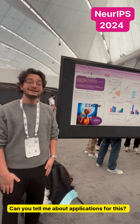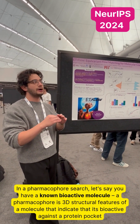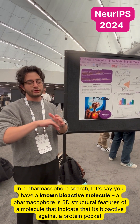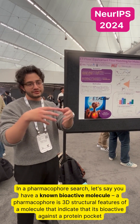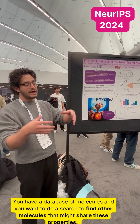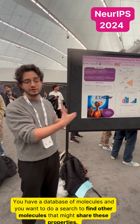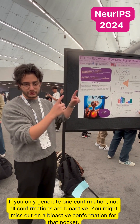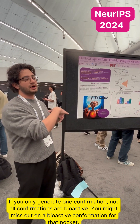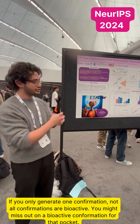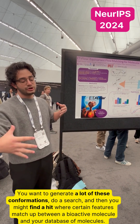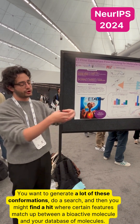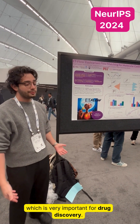For applications, you can use this for a pharmacophore search. Let's say you have a known bioactive molecule and you want to search — a pharmacophore is essentially 3D structural features that indicate a molecule is bioactive against a protein target. You have a database of molecules and you want to search to find others that share these properties. If you only generate one conformation, not all conformations are bioactive for a molecule, so you might miss out on a bioactive conformation. You want to generate a lot of conformations, do a search, and find hits where certain features match up between a bioactive molecule and your database — which is very important for drug discovery.